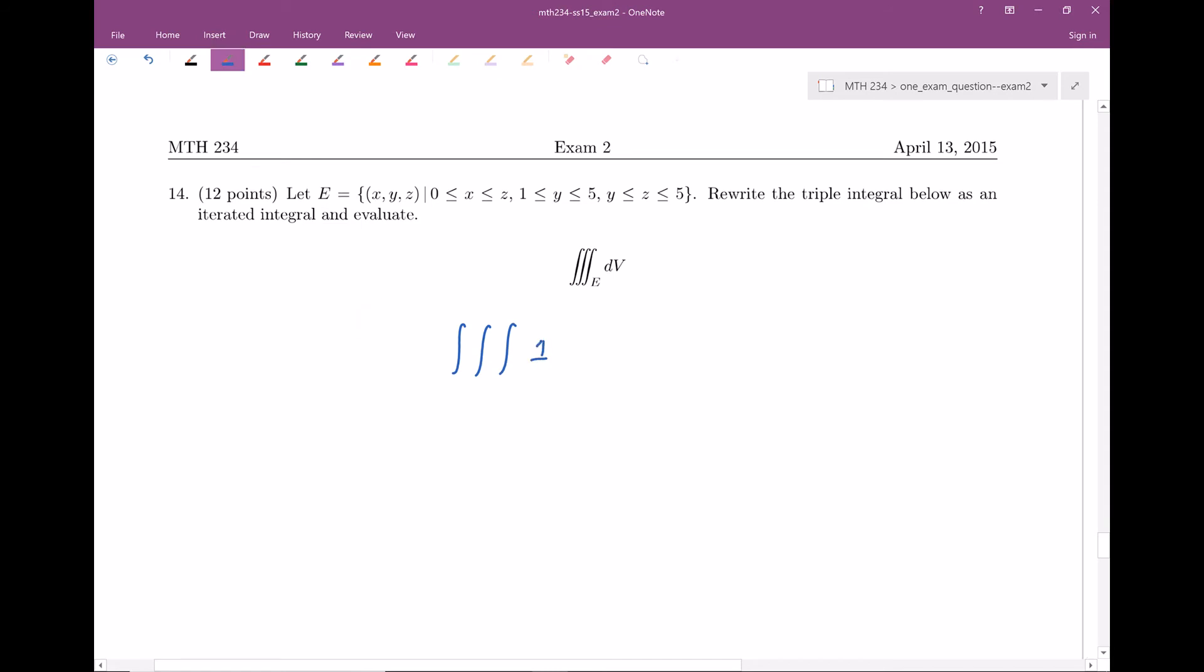We're integrating the relatively nice function one here, but we need to decide: should it be dz, dy, dx? Should it be dx, dy, dz? What's going on here? We need to look at these bounds in order to figure this out.